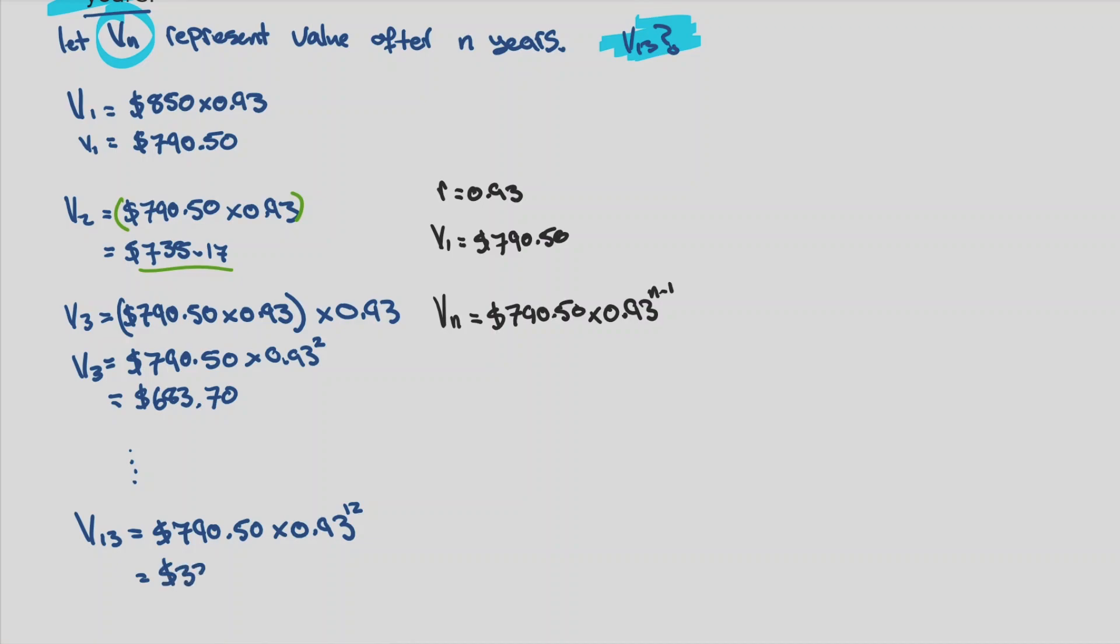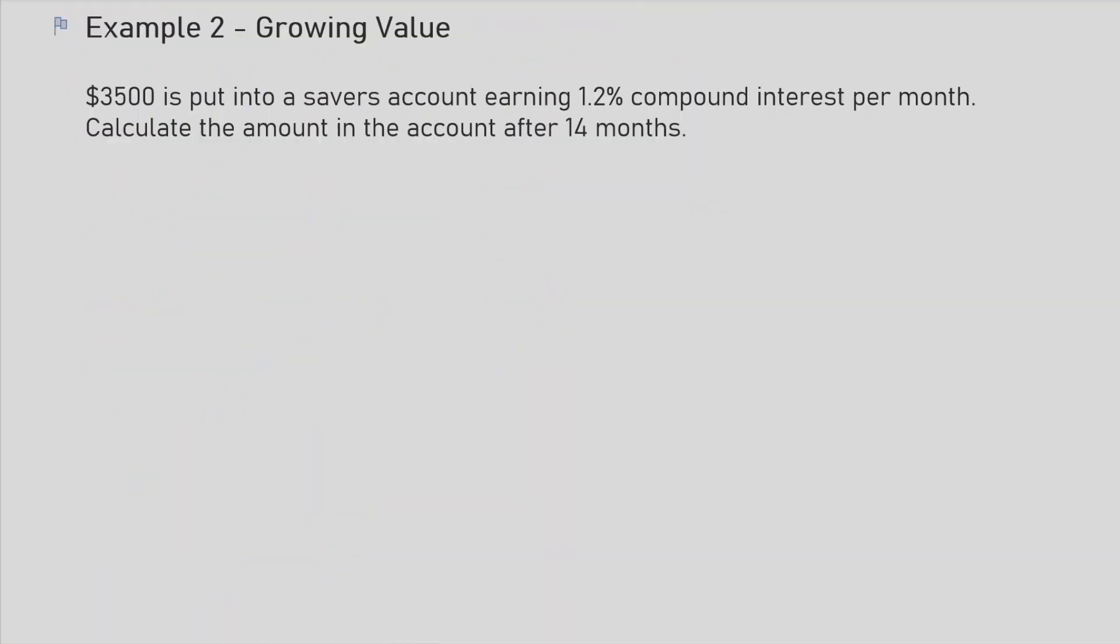And it's worth $330.90 after 13 years. $3500 is put into a savers account earning 1.2% compound interest per month. Calculate the amount after 14 months.